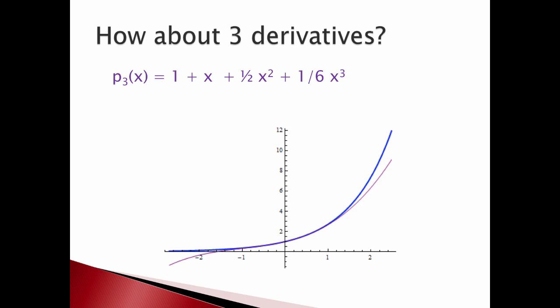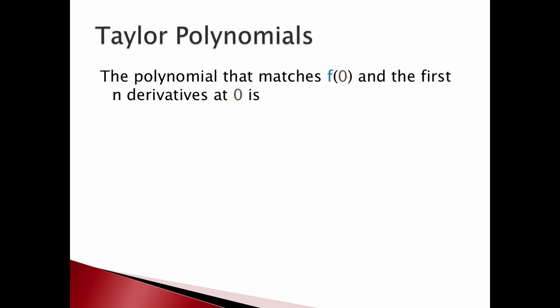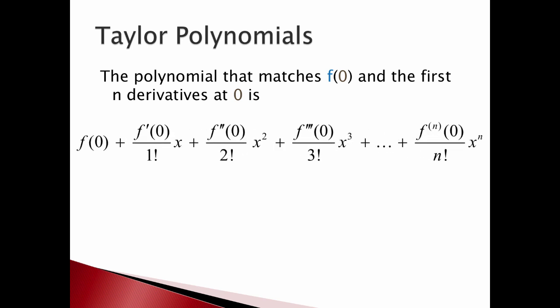And maybe you see what that function is. I'm writing out the terms in the McLaren series, the Taylor series centered at zero. So what's really going on here is I'm finding a polynomial that matches the function and its first several derivatives. And what polynomial is that? Well it's what you get when you write out the first several terms of the Taylor series.